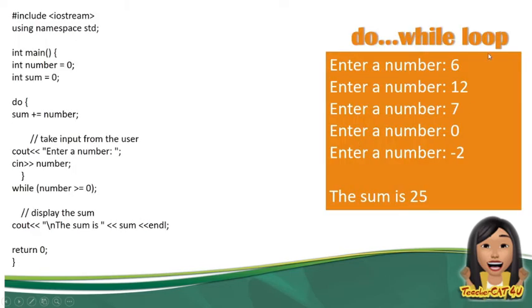This is another example of do-while loop where it accepts input. Int main, int number equals 0, int sum equals 0. Sum plus equals number. The meaning of sum plus equals number is equivalent to sum equals sum plus number. Cout enter a number, cin number. Let's say for example, in the do section, you input a value. It will store that value in the variable number.